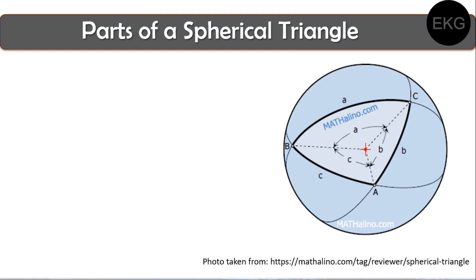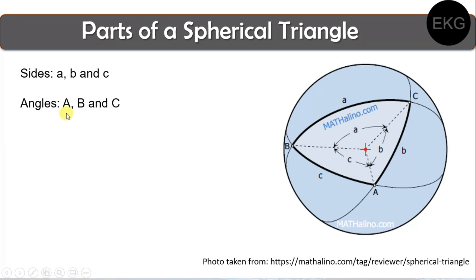Now that we have learned what spherical triangles, spherical segments, and great circles are, let's go to the parts of a spherical triangle. This triangle also has sides, represented by the small letters a, b, and c. This triangle also has angles, represented by the capital letters A, B, and C. Those are basically the parts of our spherical triangle.